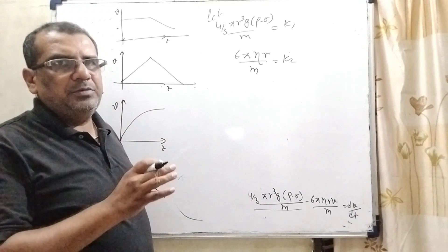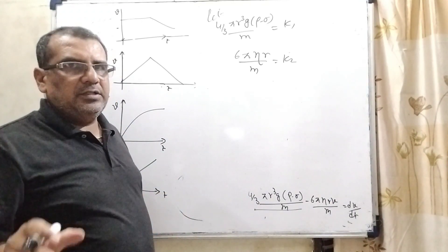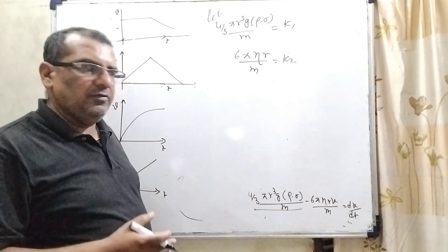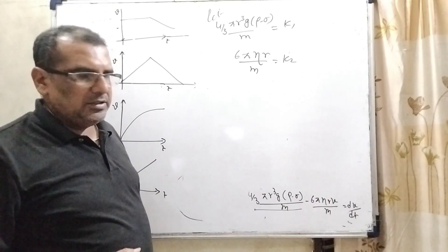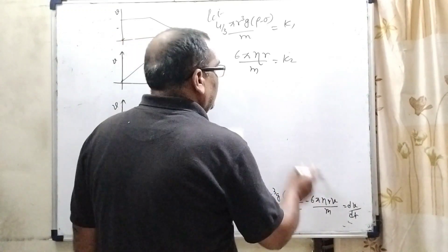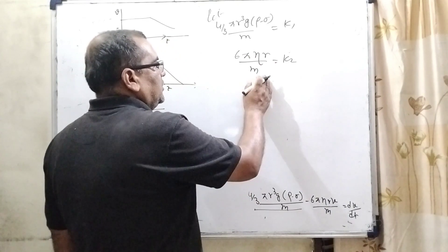And similarly 6 pi eta R upon M is considered K2 because V is variable. Why variable? Because any object which is falling freely its velocity increases. But after some time its velocity decrease and then become constant. So, therefore here V is variable.